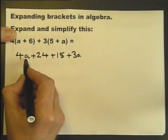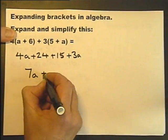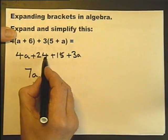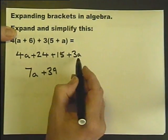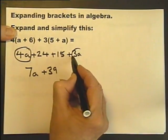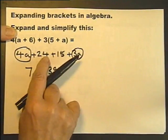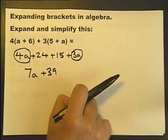We've got a 4A there and a 3A there giving me a total of 7A. Now the number, 24 and 15 is 39. This is called collecting together like terms. These two terms are called like terms. These two are actually called constants. So you could say it's collecting like terms and constants.